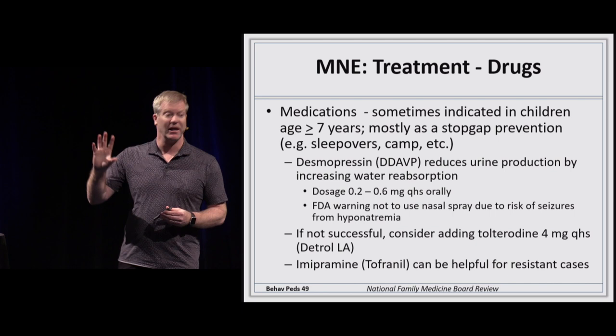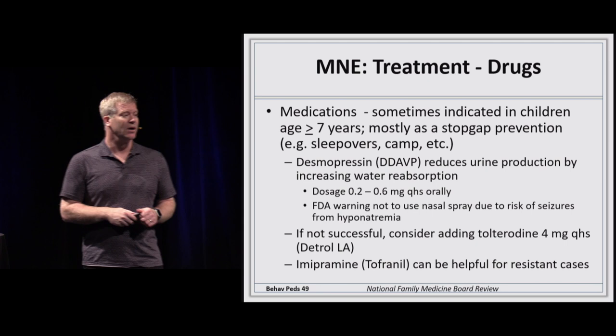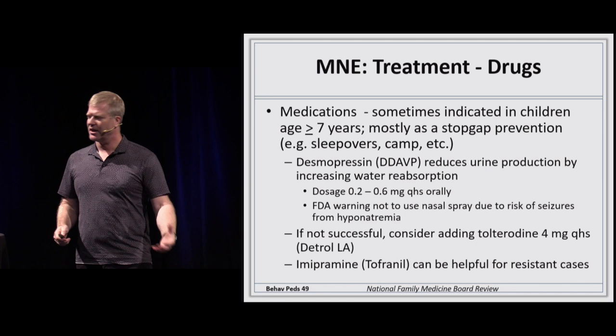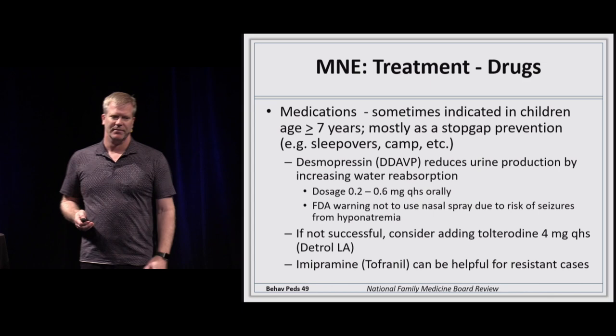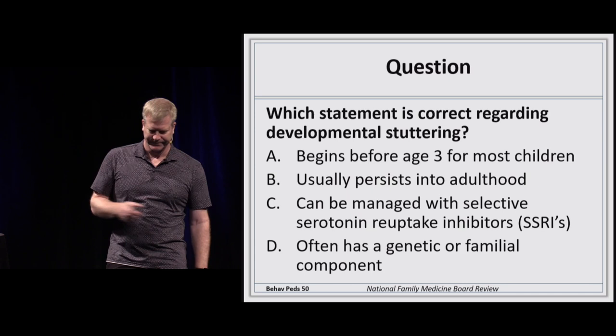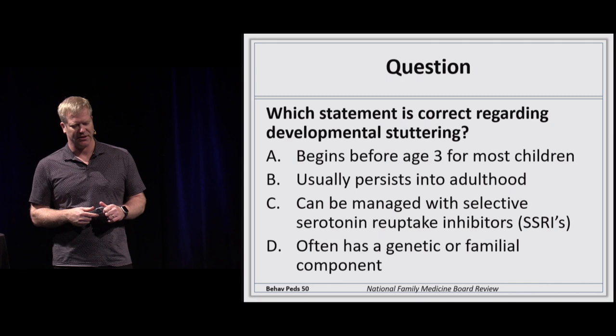Abuse is the deliberate injury of a child; neglect is failing to provide what a child needs to thrive. More children actually die from neglect than from abuse. Associations include lower socioeconomic status, children with special needs (which is taxing on caregivers), caregivers who were abused themselves, and alcohol abuse — leading to a cycle of abuse.